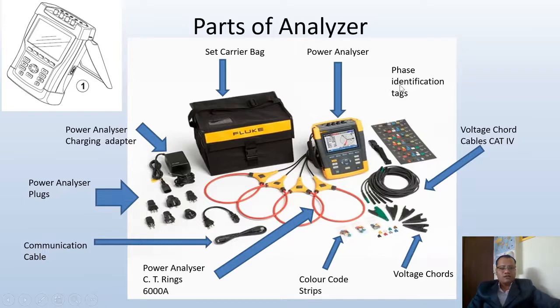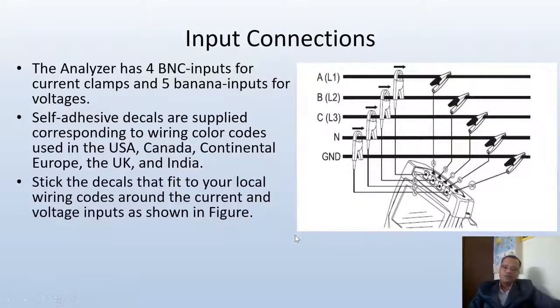These rings are the current transformer rings which come along with the power quality analyzer. Another part is the color-code strips — you can use these rings for notation purposes and attach them here since all the rings look the same. Then voltage cords — five cords are provided for voltage, and four CTs are provided: three for the three phases and one for the neutral. You have to measure voltage with respect to ground, so neutral, ground and other three phases are included.